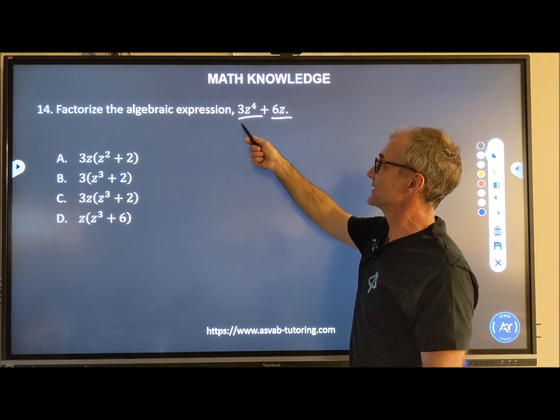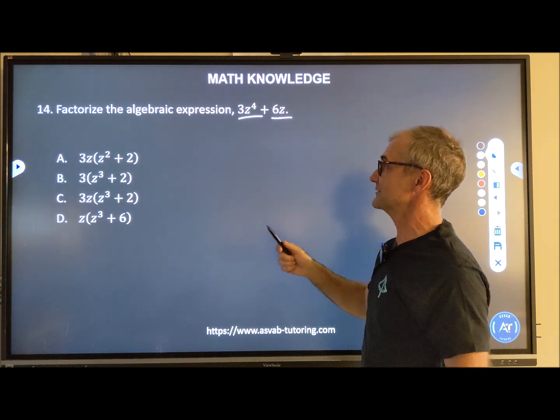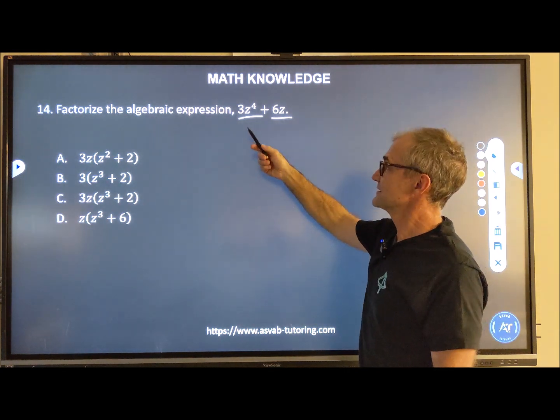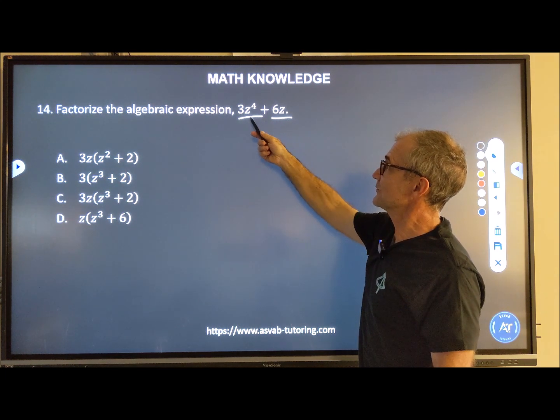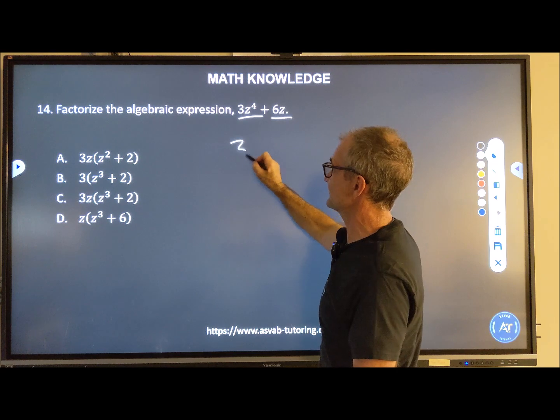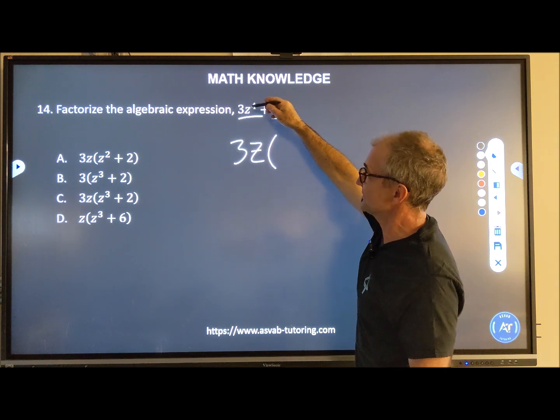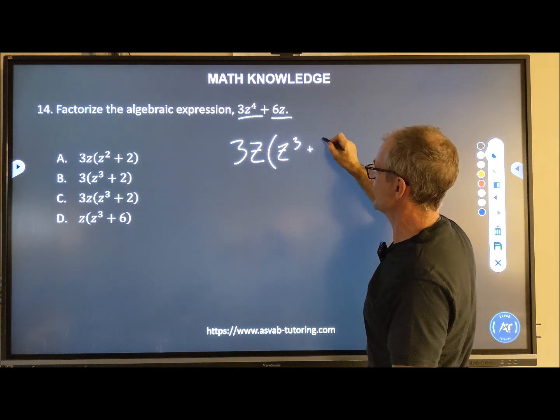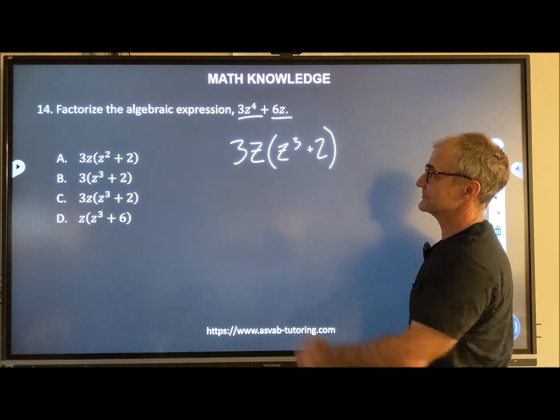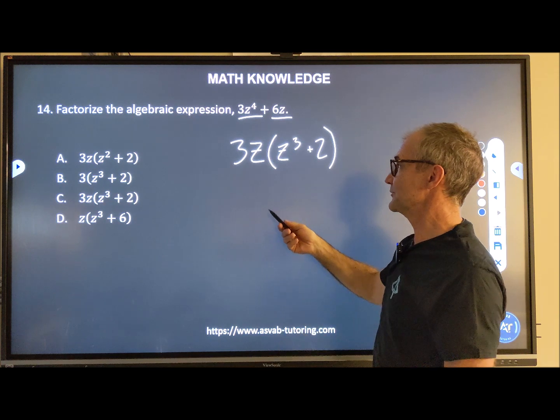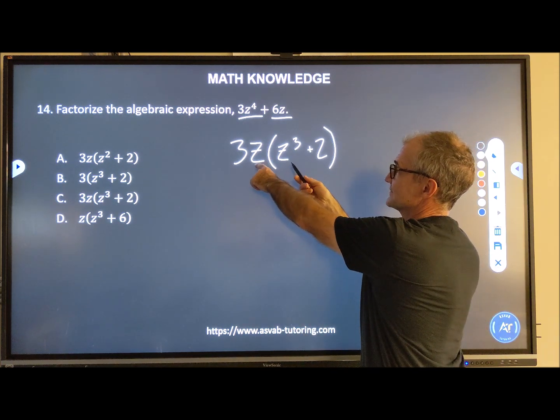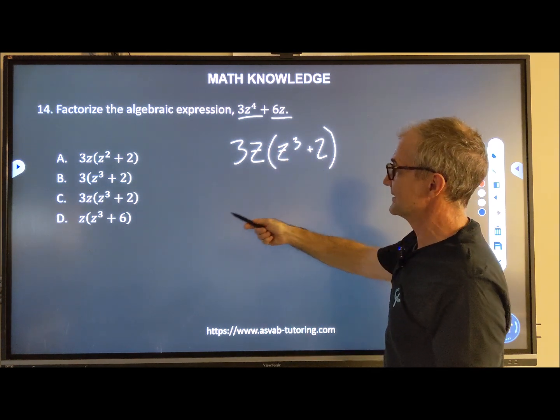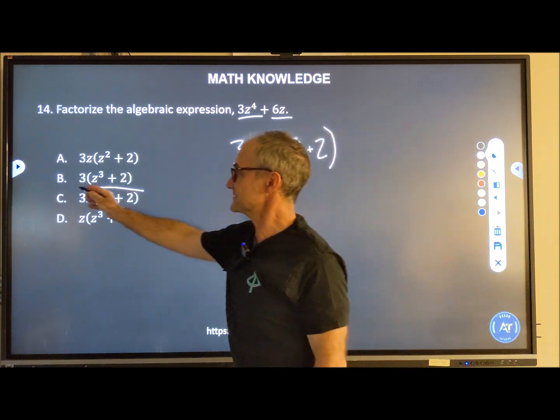Number 14, factorize the algebraic expression. So what that means is pull out the common term, very similar to what we were doing with those fractions, looking at numbers or variables that will go into both of them. So 3 is common here and here. 1Z is common in each. I'm going to pull that 3 out front. I'm going to pull that Z out front. Once I pull a 3 and a Z out of here, I'm left with Z to the third. Once I pull a 3Z out of here, I'm left with a 2. So I factored out the common term. The reverse of that, only as a check, would be to distribute. 3Z times Z to the third would be 3Z to the fourth. I would add the exponents plus 6Z. So I can see I did do that correctly. I look down here and here's my correct answer, answer C.